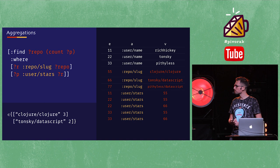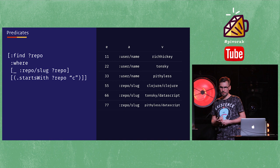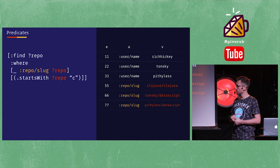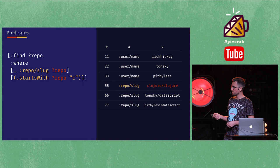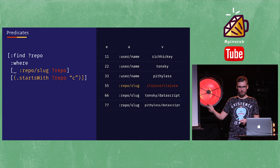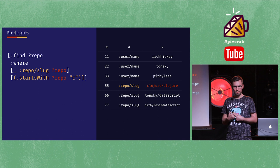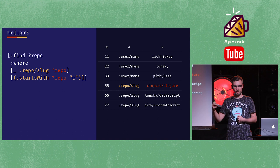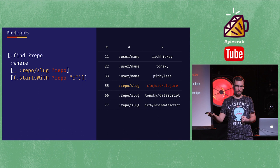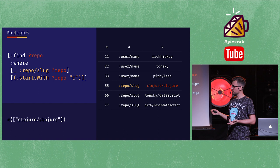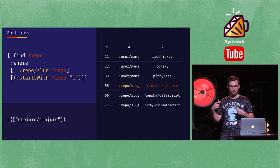Another thing a database should give you is custom predicates. No matter how cool your query language is, at some point you'll want to ask something it doesn't know how to do. Here we're going to find repos that start with the letter C. The magic is in the parentheses — this syntax lets our Datalog engine talk to the host platform. The implementations I'm most familiar with are Datomic, which runs on the JVM, and Datascript, which runs on JavaScript. In both cases, the parentheses allow me to run arbitrary code as a predicate on my host platform — like the startsWith method on String in Java. What's interesting is that there's a syntax that lets you intersperse host platform calls with all this logic programming.